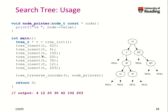Let's use our search tree. Here I created a little function called node printer, which matches the signature of our observer and simply prints the value of the nodes. We initialize the tree and insert a couple of nodes: 42, 4, 102, 20, 30, 12, 203. That results in the tree shown on the right side. After that, we call tree traverse in-order with our node printer function, and it will print the in-order execution: 4, 12, 20, 30, 42, 102, and 203 — which is exactly the sorted order.